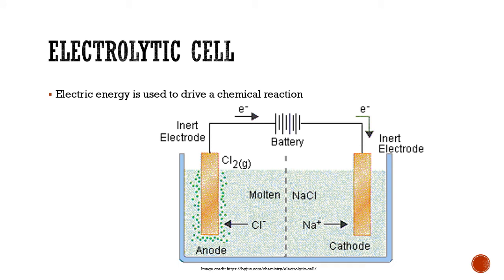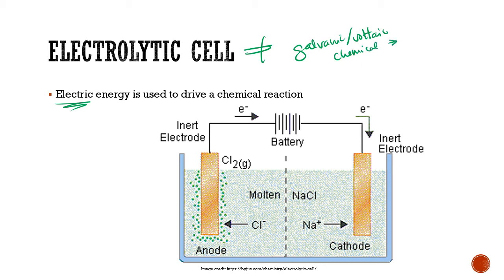Now we're going to flip over to the other kind of cell — the electrolytic cell. This is not the same as galvanic or voltaic cells; these are kind of opposites. We're going to use electricity to force a chemical reaction to happen that would not happen spontaneously, whereas in the galvanic/voltaic cell we used a spontaneous chemical reaction to produce electricity.